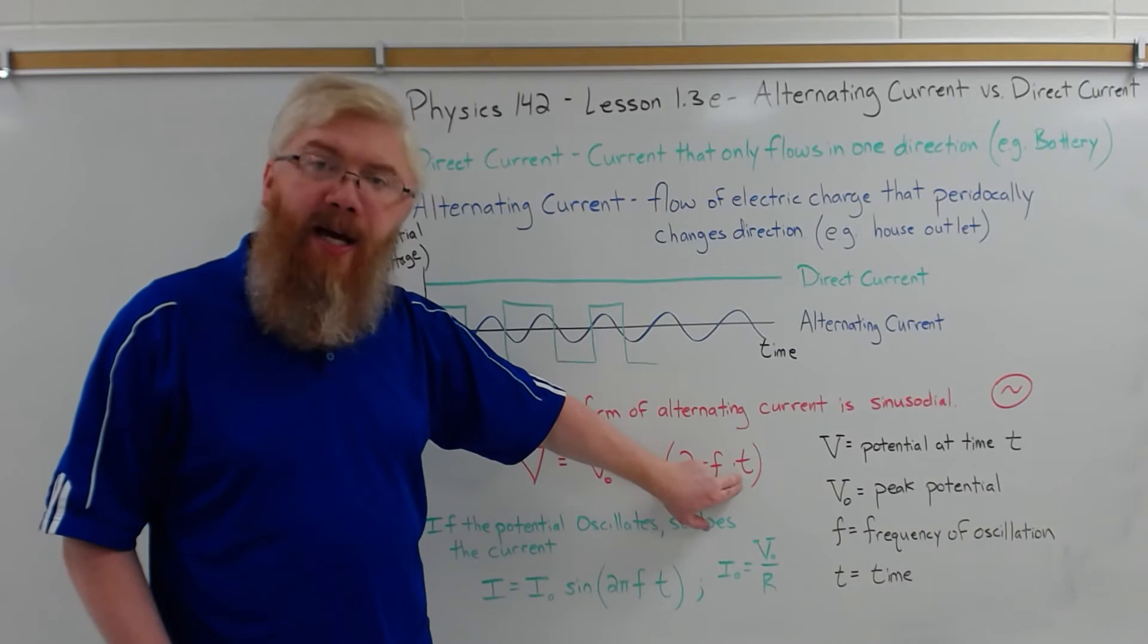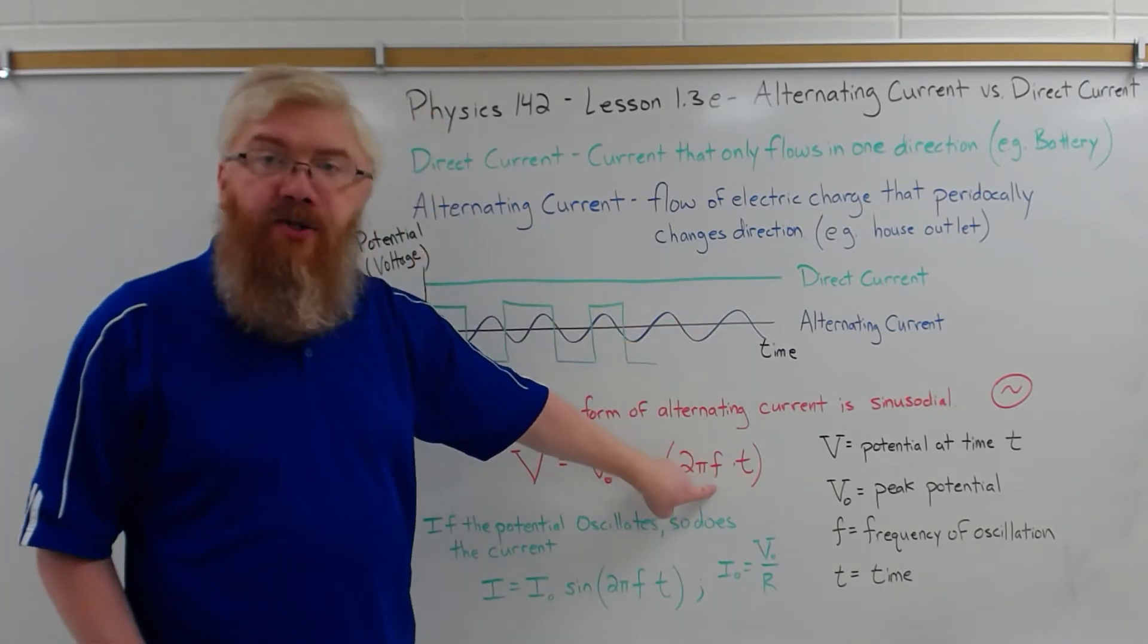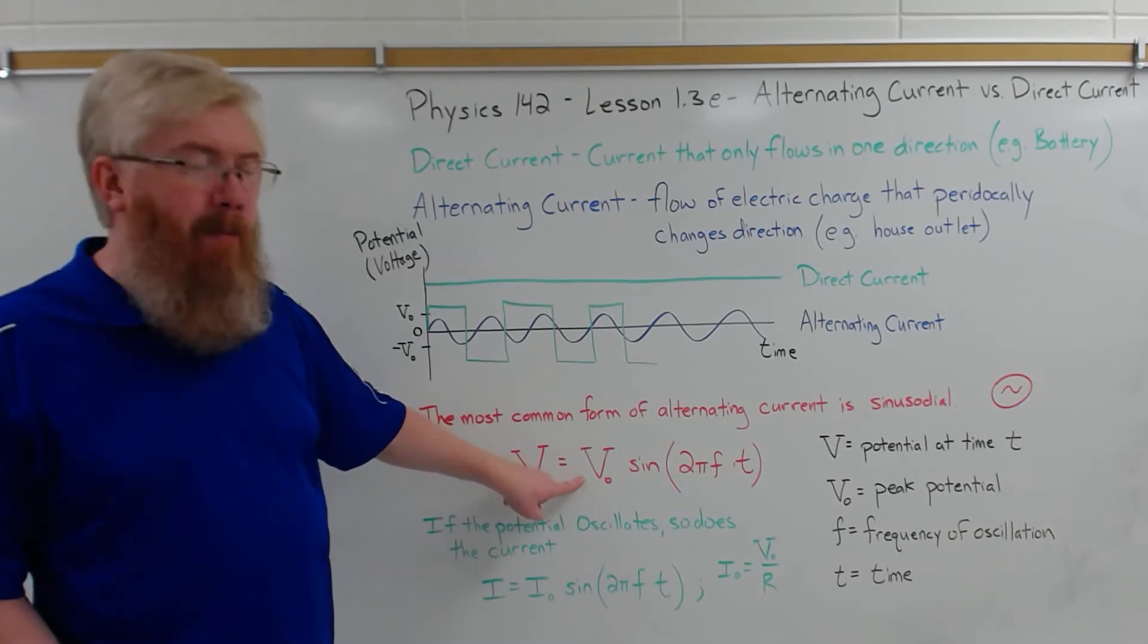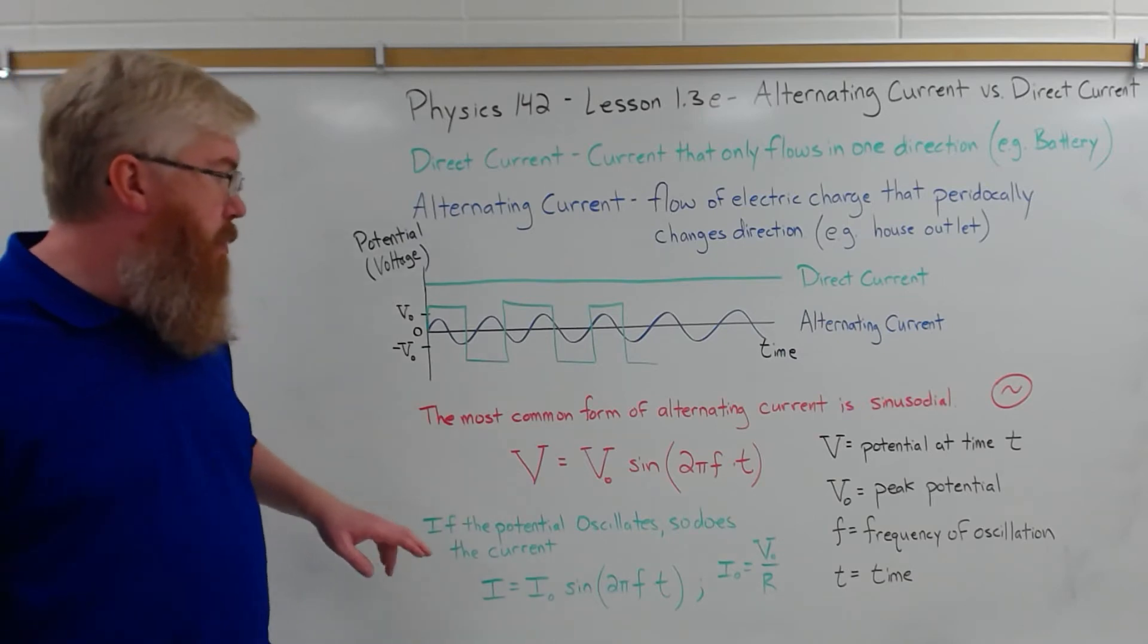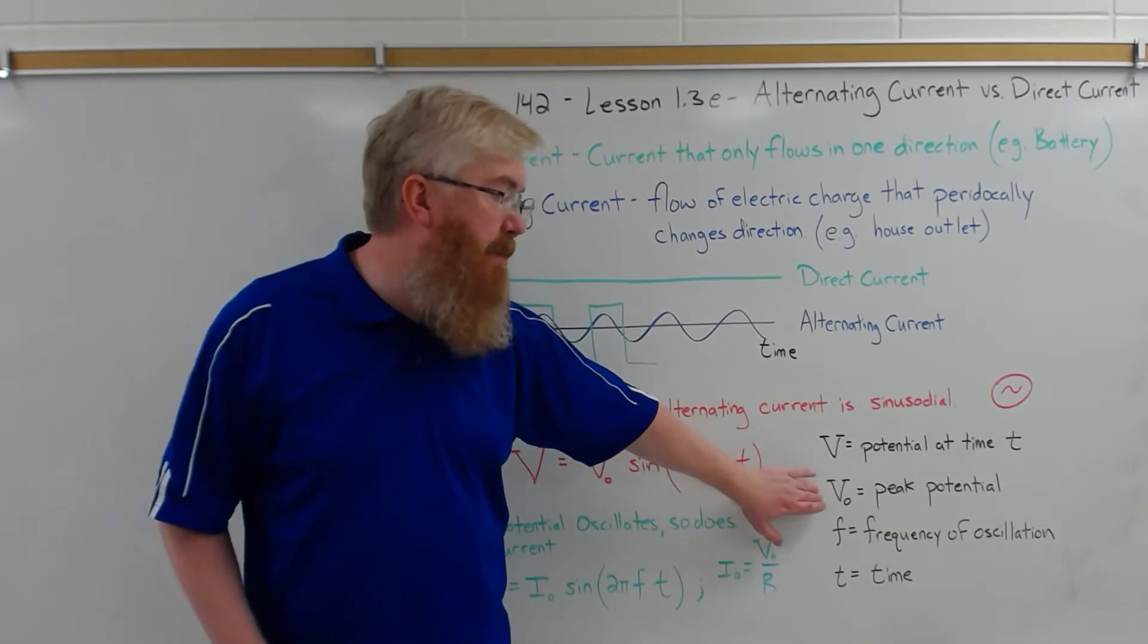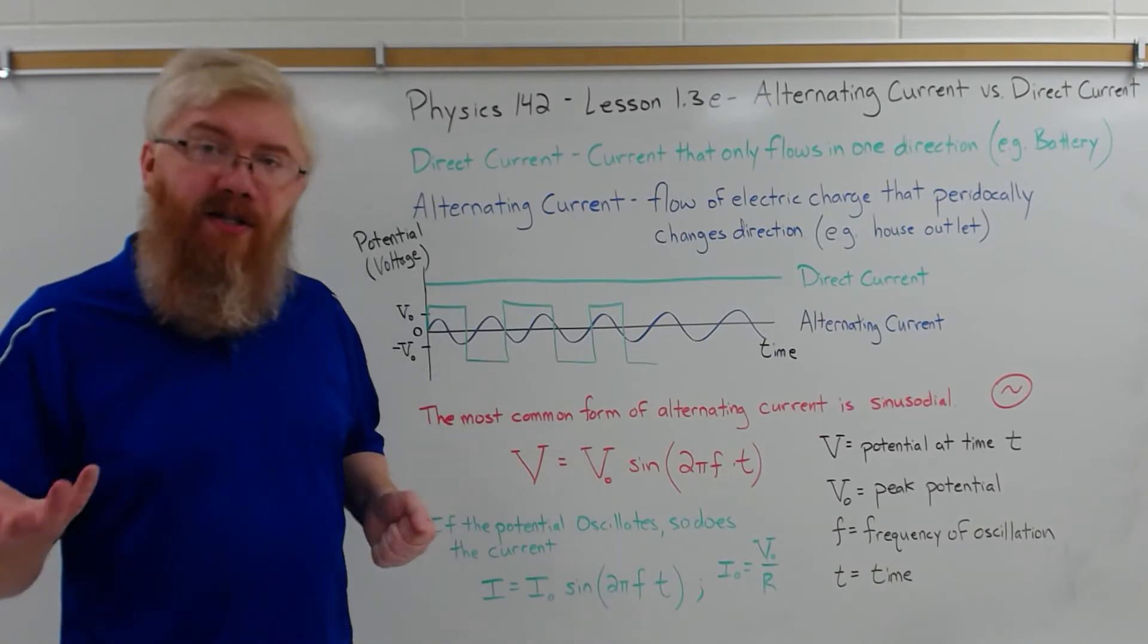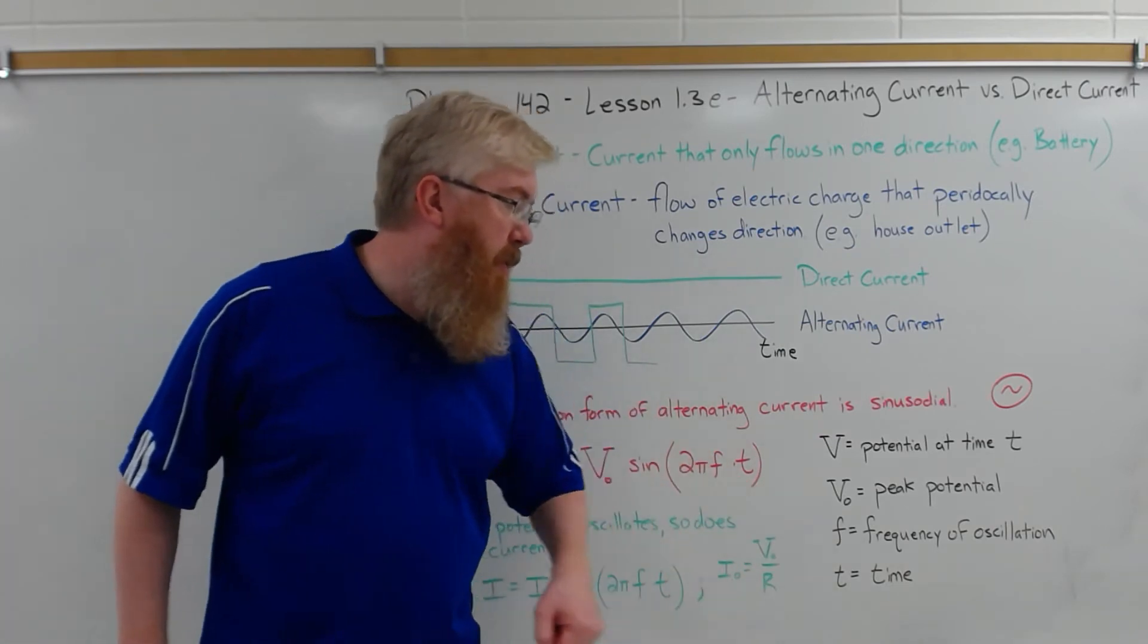Times the time. So as time changes, as time goes on, as time changes, the frequency doesn't change, that's 60 hertz out of your wall outlet. The maximum potential doesn't change out of a wall outlet, that's 171 or so volts. The potential changes with time. And again, the values here: V is the potential at time T. V₀ is the peak potential. Your book might call these voltages at that time. Again, potential is the proper way of referring to it. Voltage is the unit. F is the frequency of oscillation and T is time.